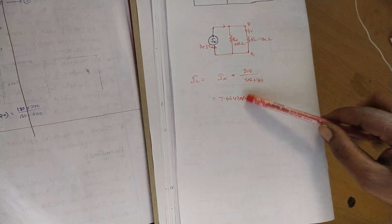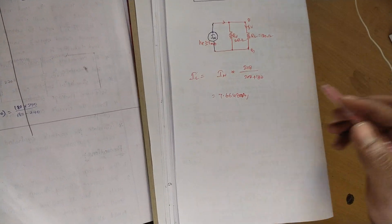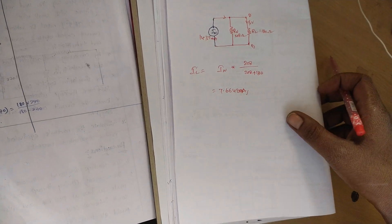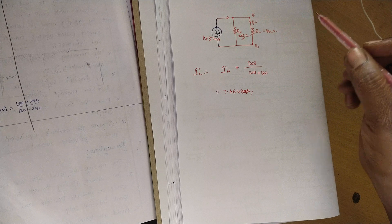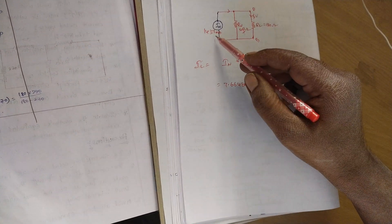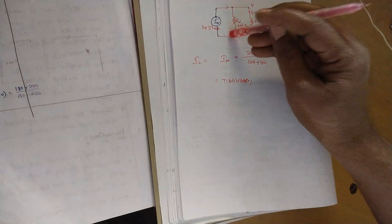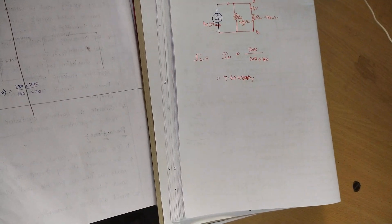Let us see practically whether this load current will come or not. What is Norton's resistance? Norton's resistance of 208 ohm — let us verify it came correctly in the laboratory. Norton's current — whether this current value will come or not, we can see. Let us see the experiment.